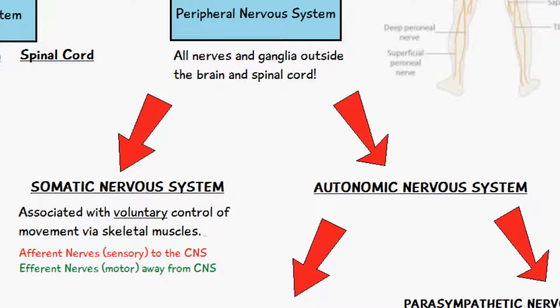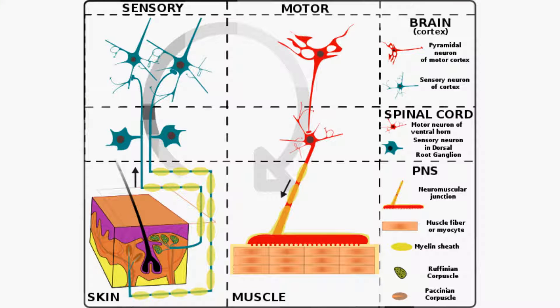Afferent nerves or sensory nerves are directed towards the central nervous system — the brain or the spinal cord. So they travel from a receptor or a certain part of the body towards the central nervous system. Efferent nerves or motor nerves are traveling away from the central nervous system, and in the case of skeletal muscle movement, they end up reaching a muscle so that we have muscle contraction.